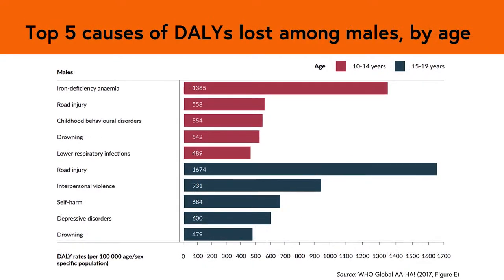For males, this picture is slightly different. Anemia is also the top cause of DALYs lost in 10 to 14-year-olds. However, road injury, interpersonal violence, self-harm, depressive disorders and drowning are the top causes. These changes in disease patterns mean that the risk factors for disease shift from unsafe water, unsafe sanitation and inadequate hand washing, to alcohol and drug use, unsafe sex and intimate partner violence.